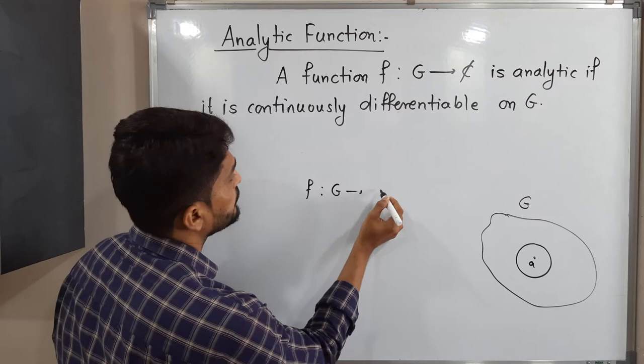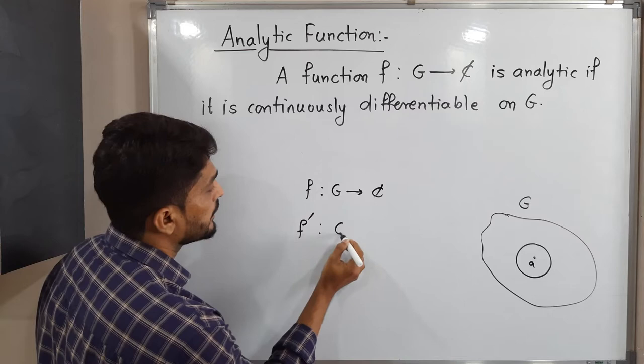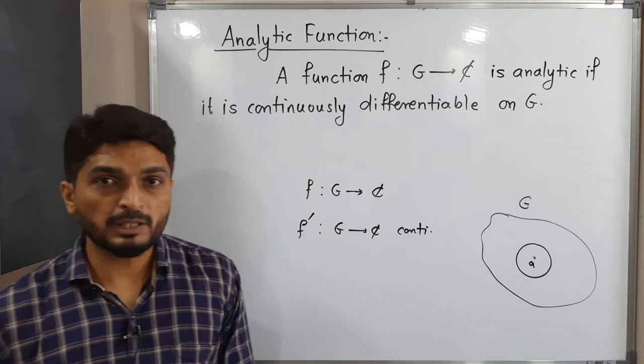You know that if a function is differentiable, you can find its derivative f dash, which is again from G to C and is continuous. So that means the function should be differentiable and its derivative must be continuous. Then we say the function is analytic function.